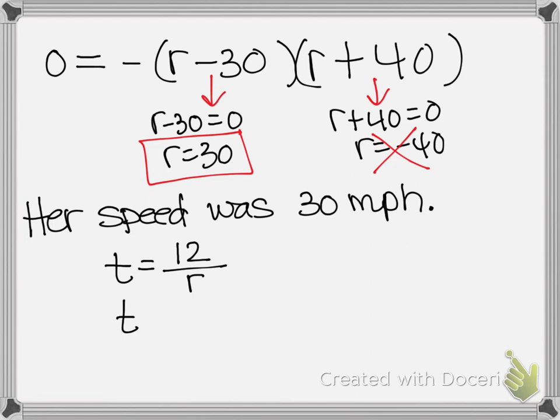Her time ratio was 12 over R because her distance was 12 miles and her rate was unknown. Well, now we know her rate is 30. Now we know her rate is 30. So her time is 12 30ths of an hour.